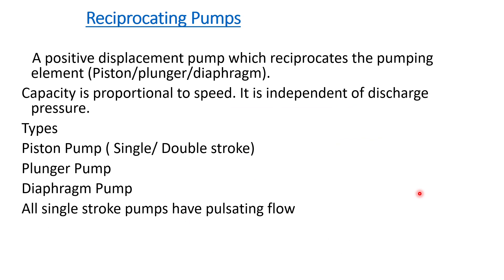A reciprocating pump is a positive displacement pump which reciprocates the pumping element that moves in a linear motion. This pumping element may be a piston, a plunger, or a diaphragm. The capacity is proportional to the speed and is independent of the discharge pressure — meaning the capacity is always the same whatever the discharge pressure is, which is why it is called a positive displacement pump.